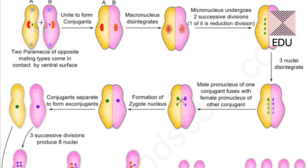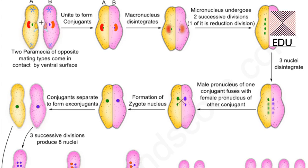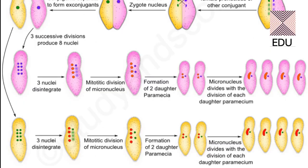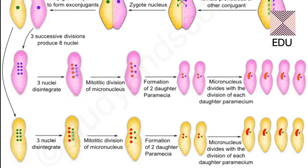This fusion results in the formation of a synkaryon — a nucleus formed by the fusion of nuclei from two different cells, also called the zygote nucleus. After this, the two conjugants separate out. The separated individual is called the ex-conjugant, which now contains a synkaryon.